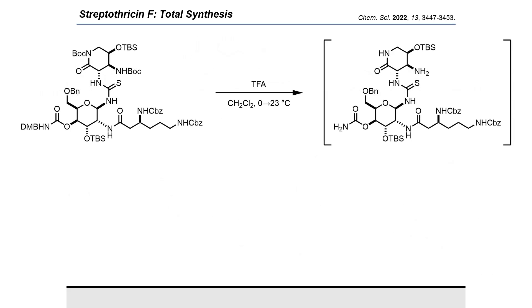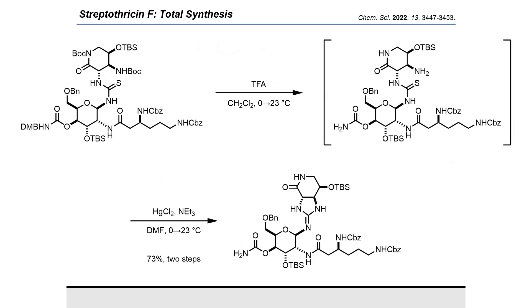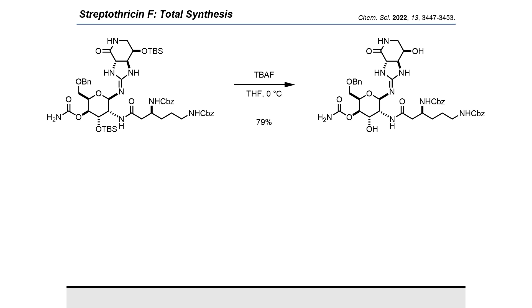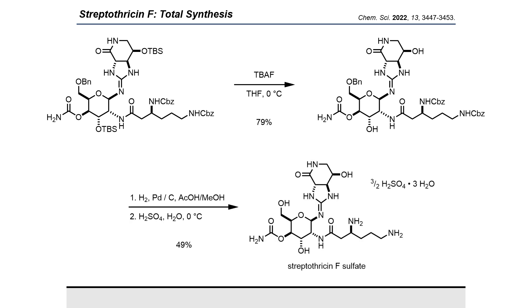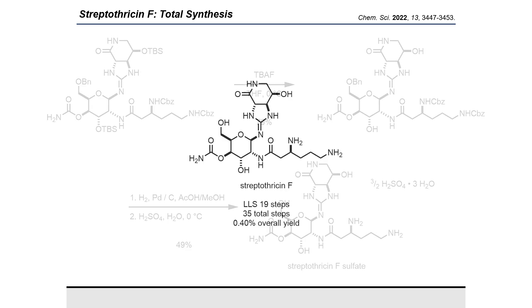Boc deprotection with TFA followed by a mercury chloride-mediated desulfurization-guanidation closes our guanidine. At this point we have finished making any new bonds and all that is left are deprotections. As advertised, desilylation with TBAF followed by hydrogenolysis gave us the acetate salt of Streptothricin F, which was converted to the sulfate salt via sulfuric acid precipitation for more straightforward biological testing comparisons with isolated Streptothricin F sulfate.